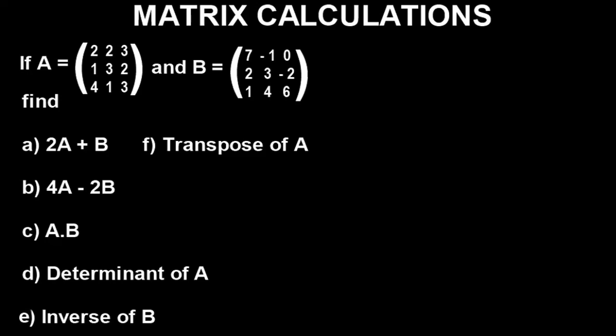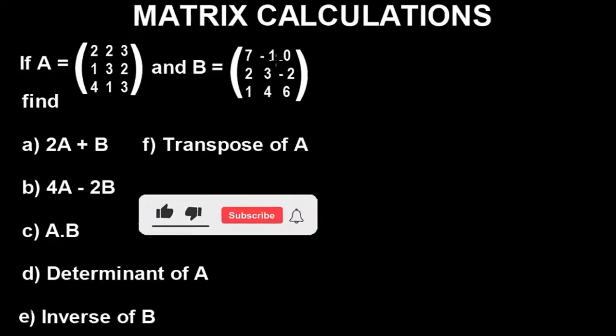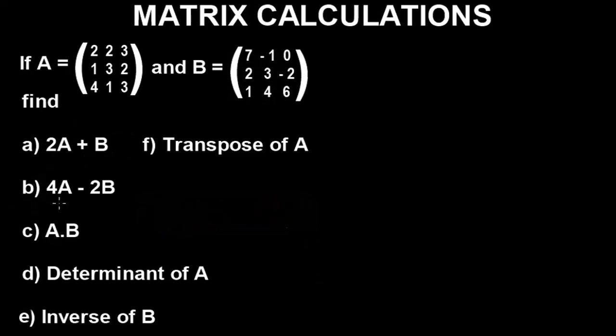Before we get into the calculator, let's quickly look at the question. The question says: if matrix A equals certain values and matrix B equals certain values, find: part A — two times matrix A plus matrix B; part B — four times matrix A minus two times matrix B; part C — matrix A times matrix B (multiplication).